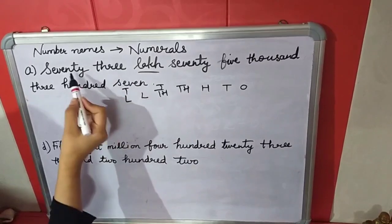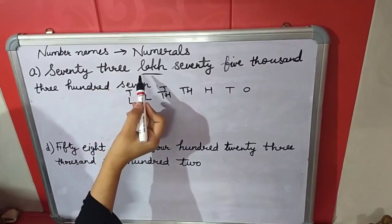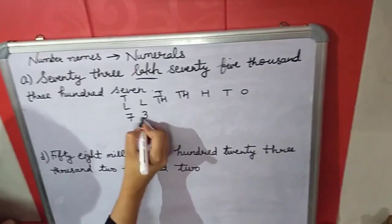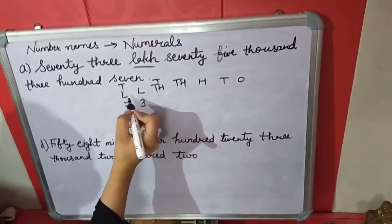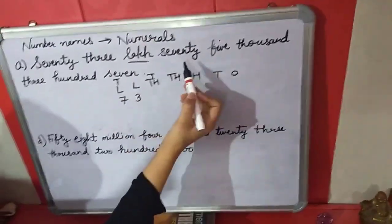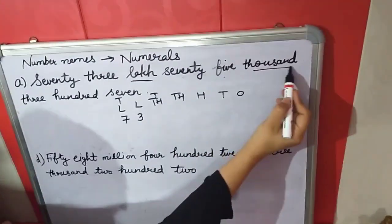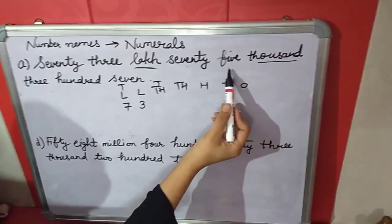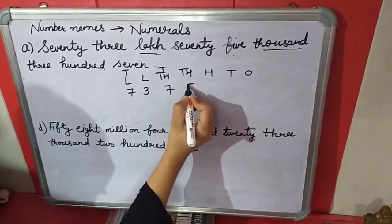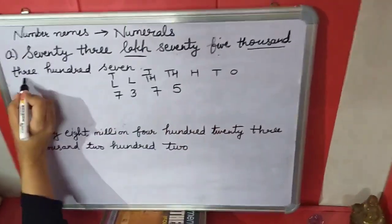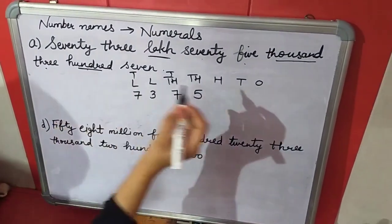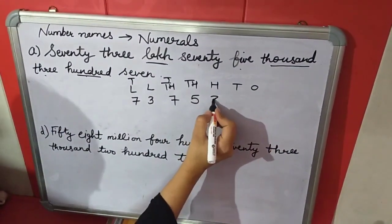What is the place value of 73? It is 73 lakhs, so 73 will come below 10 lakhs and lakhs. Next is 75,000. Since 75 is related to the 1000 family, it will come here as 75,000. Then 300 — what is the place value of 3? It is 100, so 3 will come below the hundreds place.